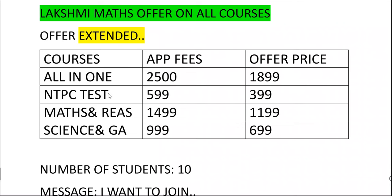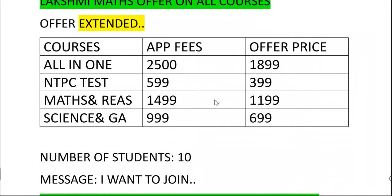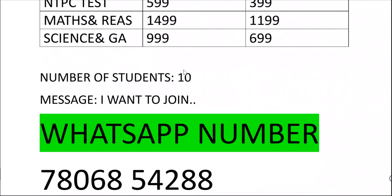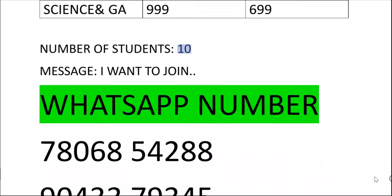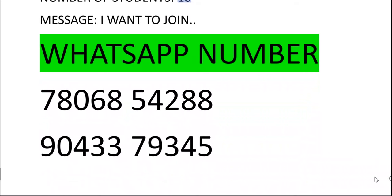If you join the all-in-one course, you pay 1999. If you join the all-in-one course, you pay 3999. You can pay for Maths and Reasoning on the app. If you pay this offer price, you can get the all-in-one course. The NTPC test path is 9900. Maths and Reasoning class is 1199. Science and General Awareness is 699. The offer is extended — only 10 students can join this offer.